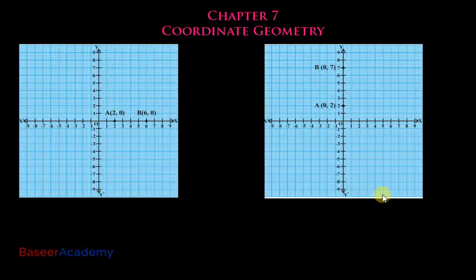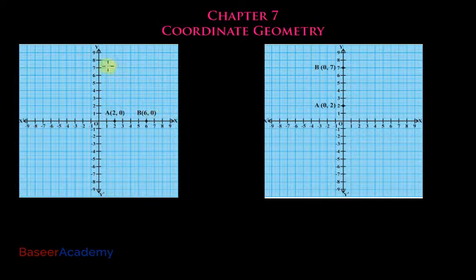Hi, my name is Basir. In this chapter we'll go through the introduction of Chapter 7, Coordinate Geometry, from Class 10 Andhra Pradesh and Telangana board syllabus. In your previous class, the ninth standard, you have learned how to fix the position of a point on a graph using two reference lines — the x-axis, which is a horizontal line, and the y-axis, which is a vertical line.